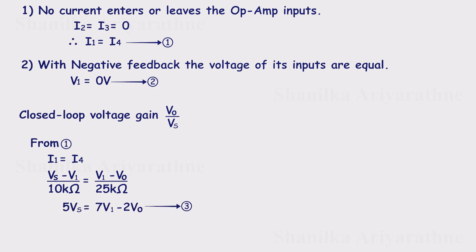From the second golden rule, we know V1 is 0 volts. Substituting that in, we find Vout equals minus 2.5 times Vs. So the closed loop gain, Vout over Vs, is minus 2.5.